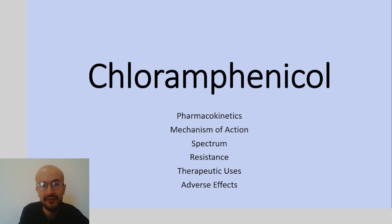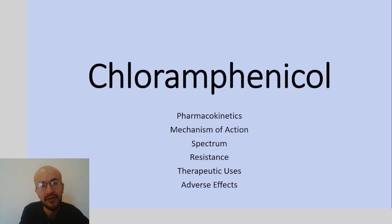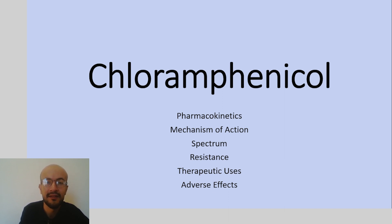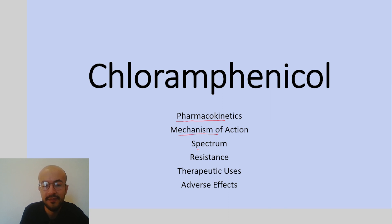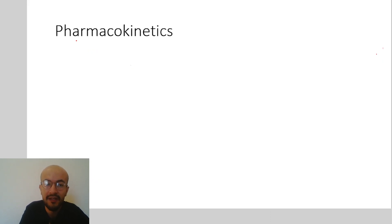Chloramphenicol was first discovered in 1949 and was used for 30 years to treat typhoid fever, but its use decreased because of the emergence of better alternatives that cause fewer side effects. It does still come up in exam questions, which is why we are discussing it today. In this video we will cover the pharmacokinetics, mechanism of action, spectrum, resistance, therapeutic uses, and adverse effects.